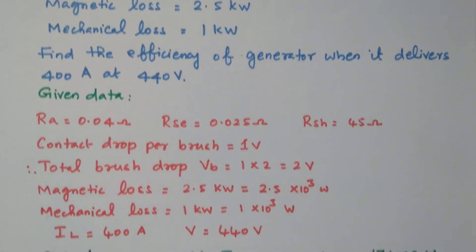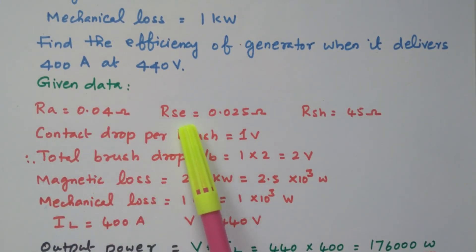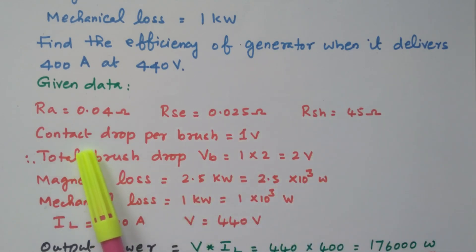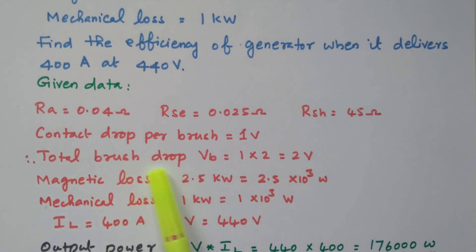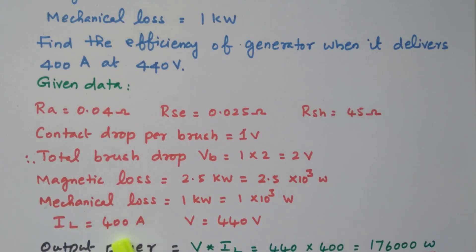Let us analyze the given data. Armature resistance Ra = 0.04 ohm, series field resistance Rse = 0.025 ohm, shunt field resistance Rsh = 45 ohm. Contact drop per brush is 1 volt, and there are 2 brushes, so total brush drop equals 2 volts. Magnetic loss is 2.5 × 10³ watts, mechanical loss is 1 × 10³ watts. Load current IL = 400 ampere, terminal voltage V = 440 volts.